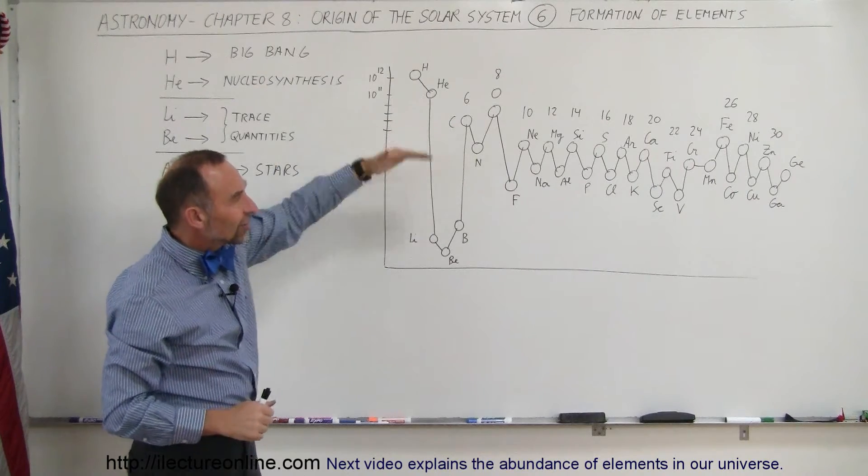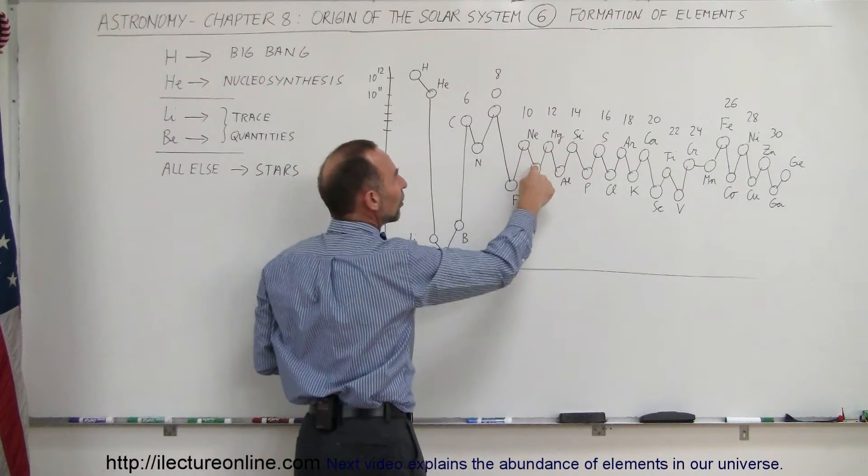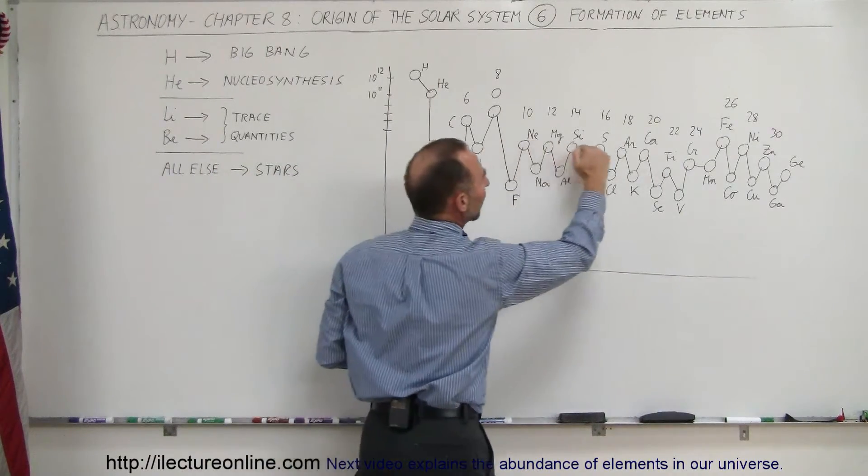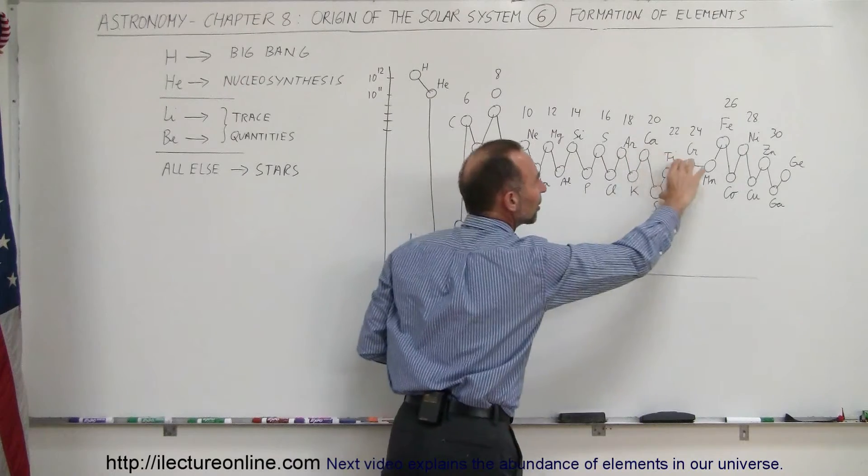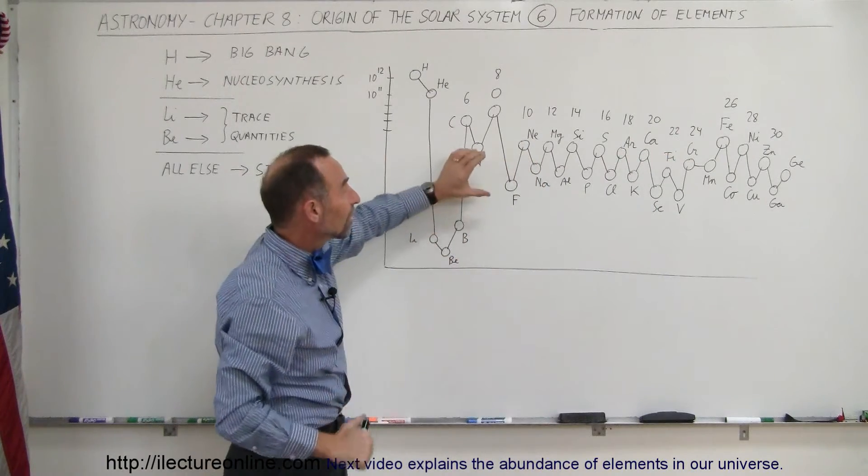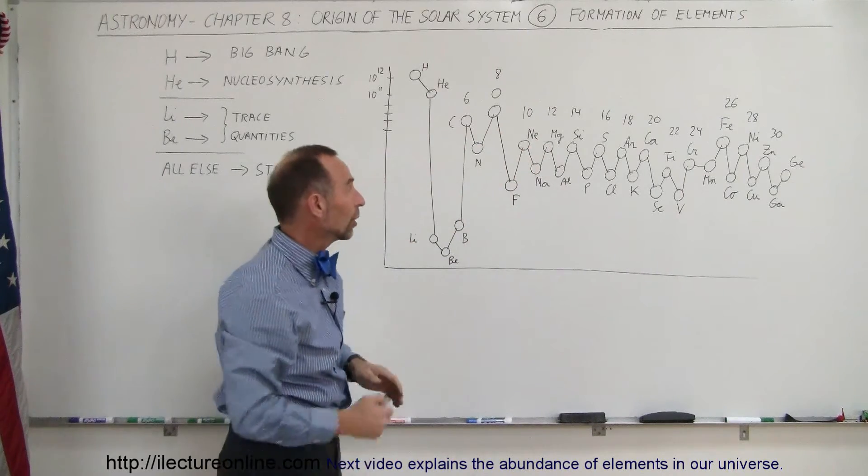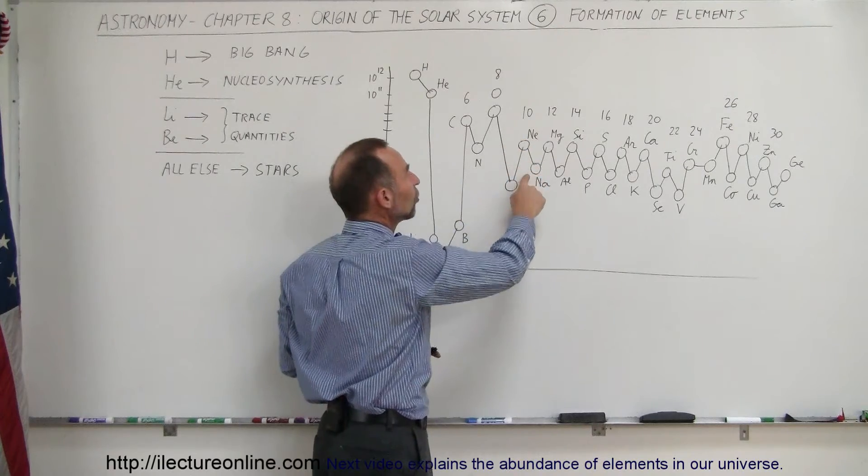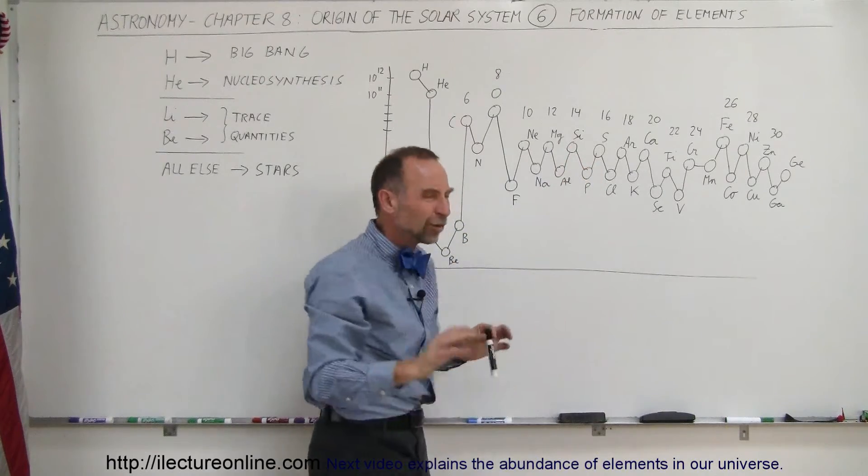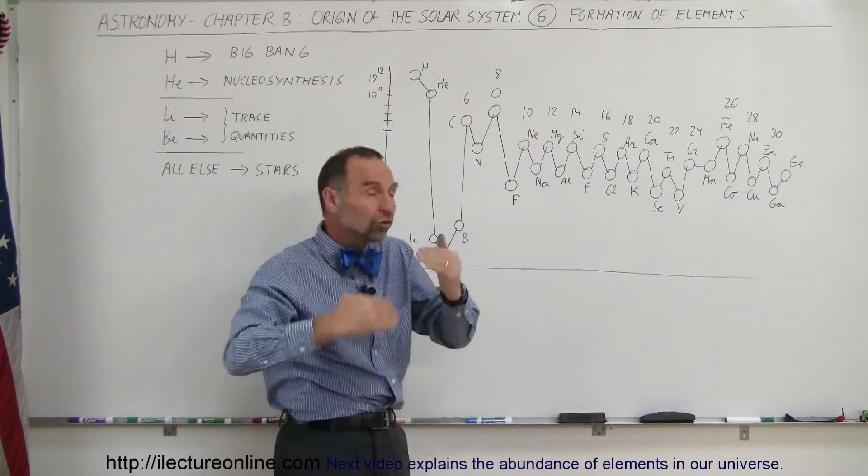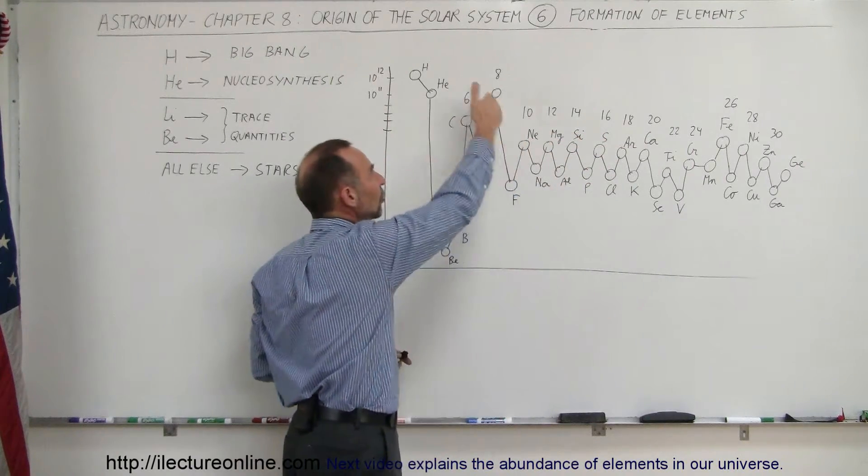Notice how there's a zigzag between certain elements and what that means is that these elements are more abundant than these ones. These are all there in about the same abundance slowly decreasing with heavier and heavier elements, but what's unique about this concept here is that the difference in abundance between these jumps right here is about 10 to 1. In other words there's about 10 times as much neon as there is sodium and 10 times as much magnesium compared to aluminum and about 10 times as much silicon as compared to phosphorus.